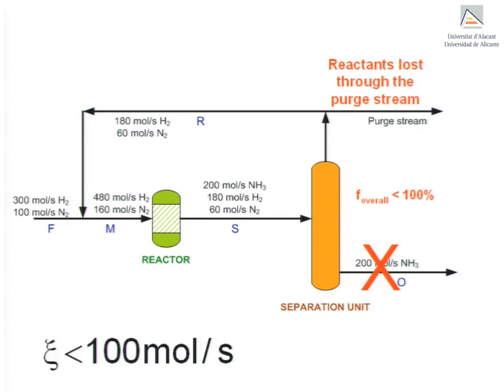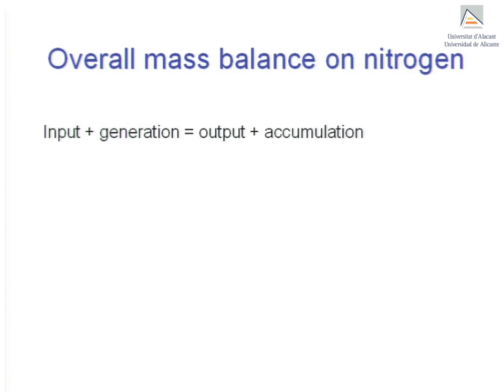This causes the global conversion to be less than 100% on the one hand, but the extent of reaction to be smaller than 100 moles per second on the other. Let's see why by considering an overall mass balance on nitrogen. Nitrogen enters the process in stream F, gets consumed in the reactor by an amount that equals the extent of reaction (nitrogen's stoichiometric coefficient is one), and leaves the system in stream P.